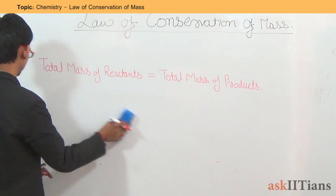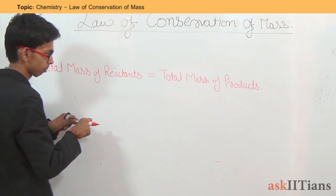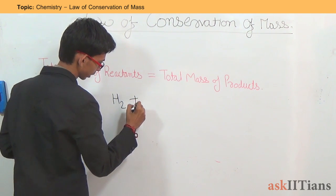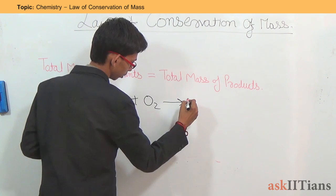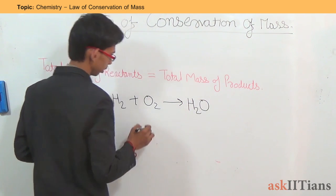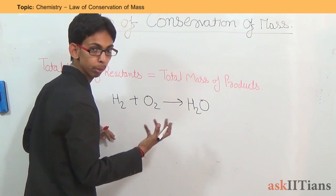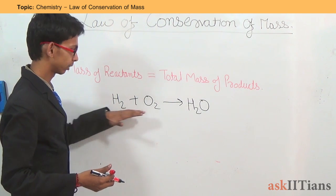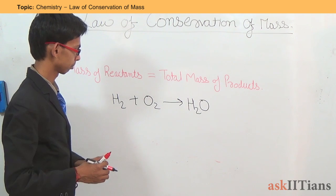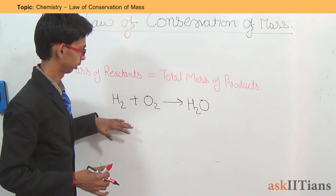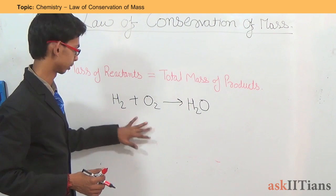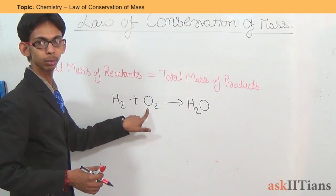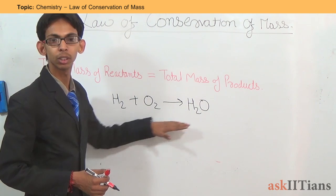Let's try to solve a numerical problem. H₂ reacts with O₂ to form water. Is this a balanced equation? No, this is not balanced, because there are 2 oxygen atoms on the reactant side but only 1 on the product side. So this is not a balanced equation.